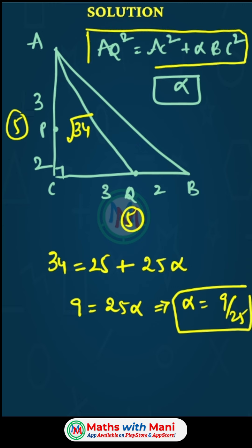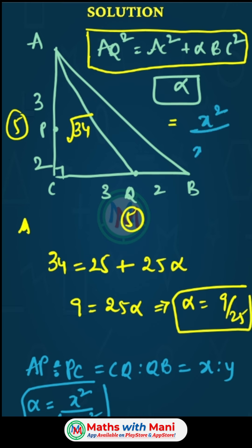From these two examples, you can observe that if AQ² = AC² + α BC², and the ratio AP:PC = CQ:QB = X:Y, then directly α = X²/(X+Y)². This is the direct formula: α = X²/(X+Y)².